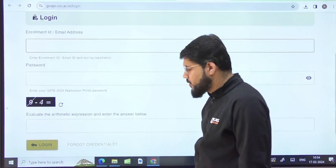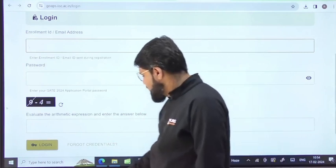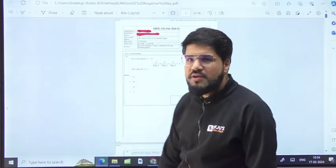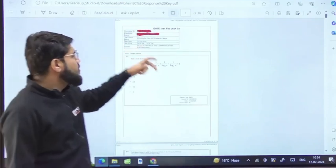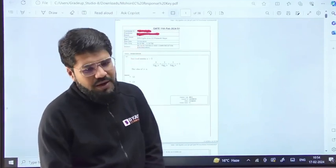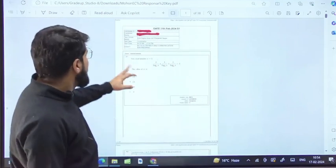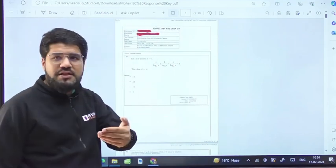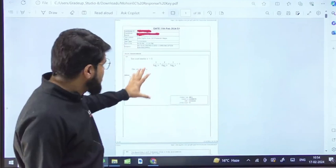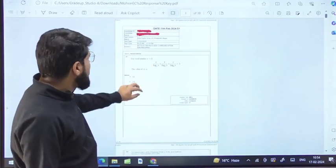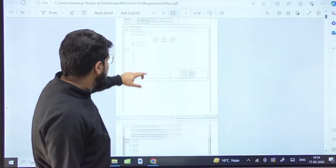I have the response key of one of the students, just to give you a highlight. This is a response key of one of the students of Electronics, but whatever your branch could be, you'll be getting this response key. The first questions - as I have seen in other response keys also - the first 10 are arranged as aptitude only.